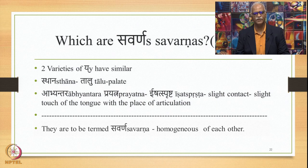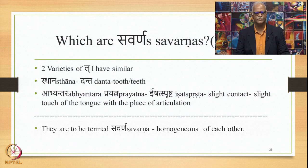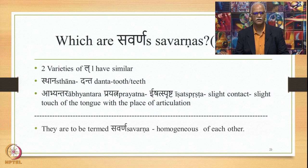There are 2 varieties of Yer — nasalized and non-nasalized. They have similar Sthana, namely Talu, and similar Abhyantara Prayatna, namely Ishatsprashta — that is, slight contact or slight touch of the tongue with the place of articulation. These 2 varieties, Yer and Yen, are to be termed Savarna of each other. The same is the case with La, which has 2 varieties — nasalized La and non-nasalized La. Both have Sthana Danta and Abhyantara Prayatna Ishatsprashta, so they are Savarna of each other.